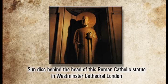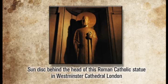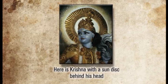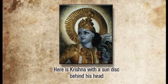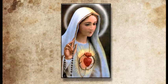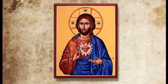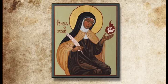The sun disc behind the head of this Roman Catholic statue in Westminster Cathedral in London — where did they get that idea? It's because this is what was found behind the head of Jupiter and all the sun gods. That halo is not a halo; that is a sun disc, borrowed from paganism. We see the same sun disc behind Krishna, predating Catholicism by hundreds, even thousands of years. We see it in stained glass windows behind Roman Catholic saints, even Mary, along with the sacred heart — which also comes right out of paganism, connected to Baal and Tammuz, the sun gods.